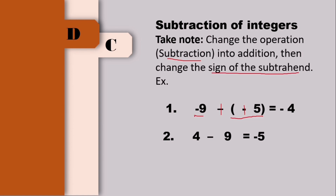Isipin natin na sa isang kantin tayo: negative means utang, positive means pera. Kung may utang tayo na negative 9 sa isang kantin, kung may 5 pesos tayo na pera, ilan na lang utang natin? That is negative 4. Next, 4 minus 9. Ang operation natin is minus, magiging plus yan. Ang sign ng 9 dito — kung walang nakalagay, understood na positive yung sign. I-change natin yung positive na yan into negative. Kaya ngayon, 4 plus negative 9 na yung nandito. Meron tayong 9 pesos na utang sa kantin, kung may 4 pesos tayo, ilan na lang yung utang natin? So meron pa tayong utang na 5 pesos. Ganun lang yung subtraction of integers.